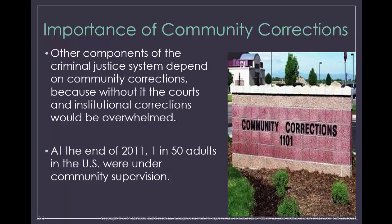When we think about corrections, institutional corrections are probably the first thing that comes to mind. We envision a large prison that is guarded by barbed wire and it's full of hardened prisoners. But realistically, the community correction programs are the more important of the two, given the sheer numbers of offenders who are under supervised release. At the end of 2011, approximately 5 million adults were on either probation or parole, comparative to the 2 million who were sentenced to jail or prison.